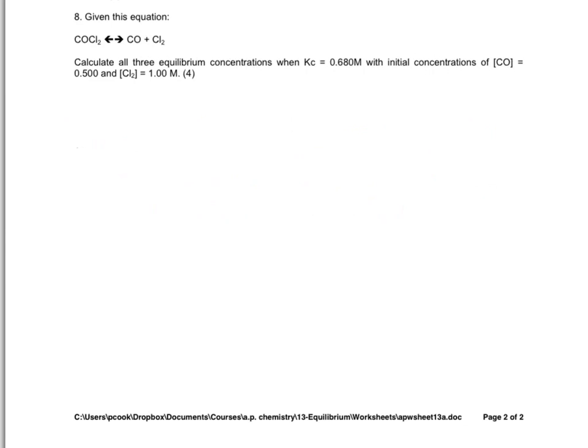So in the case of this problem, we see that we have initial concentrations that are given. And we also notice that we have initial concentrations that aren't equal to one another. The carbon monoxide's concentration is 0.5 molar and the chlorine gas concentration is 1 molar.